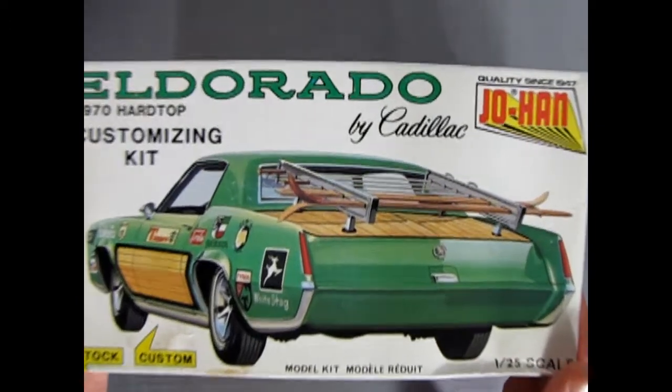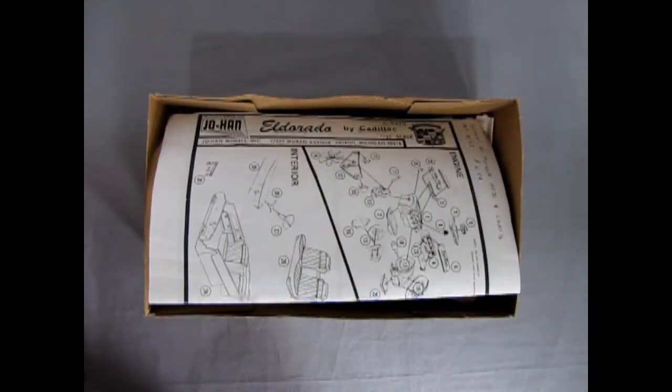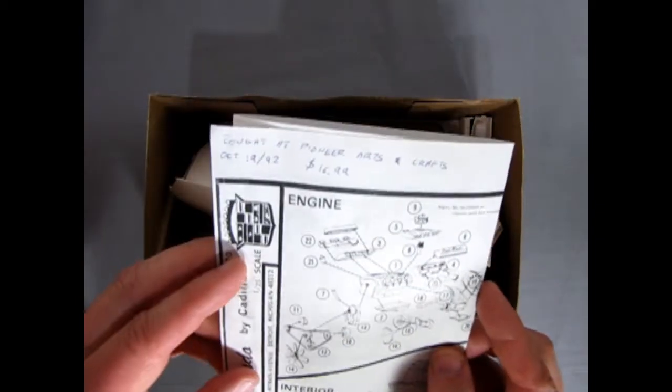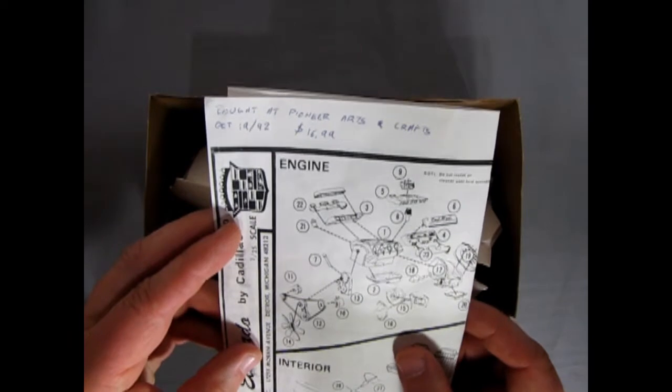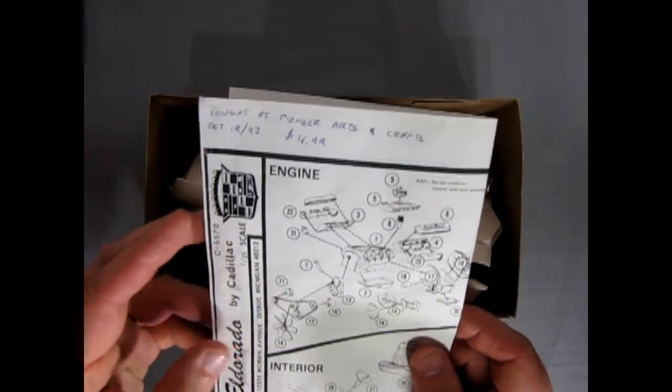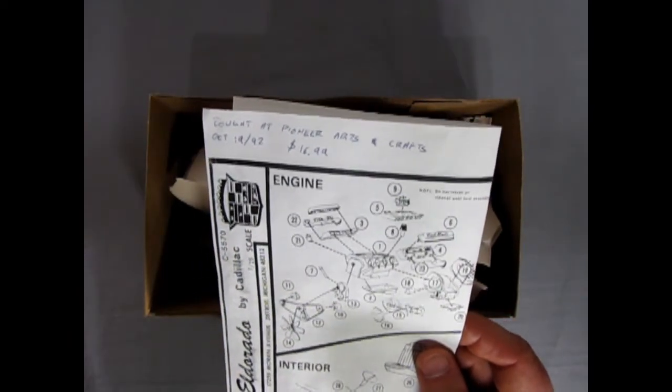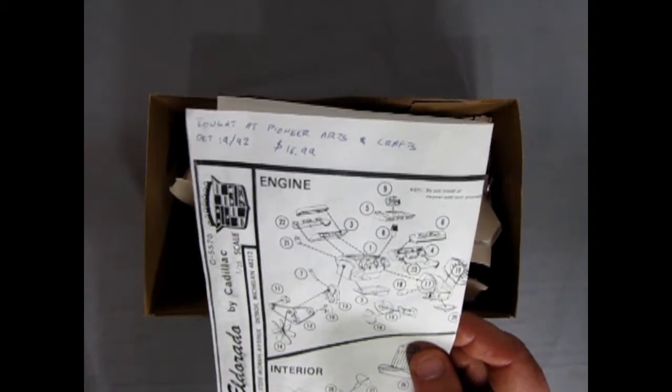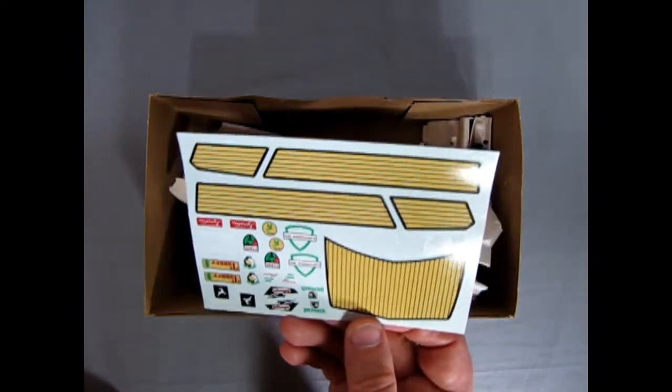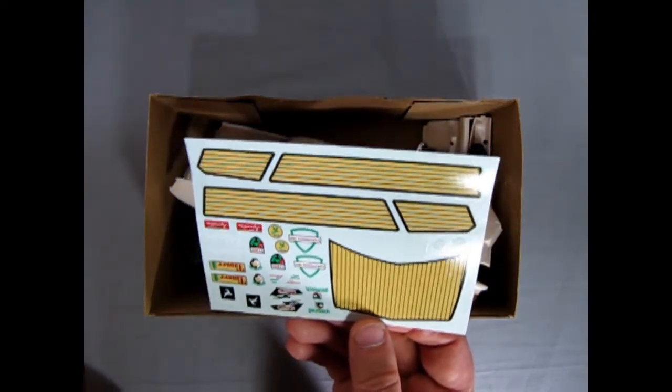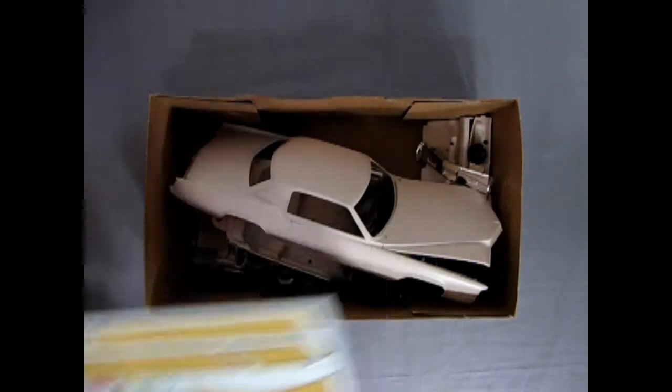So now we'll just pull the lid off the box and first off we have our instructions. It says bought at Pioneer Arts and Crafts October 19, 1992. I've had this a long time for $16.99, which was considered pretty high back then. We'll take a look at those in a minute. There's our really cool looking decal sheet for the Alpine Ski Resort, Winter Ski Resort I guess.